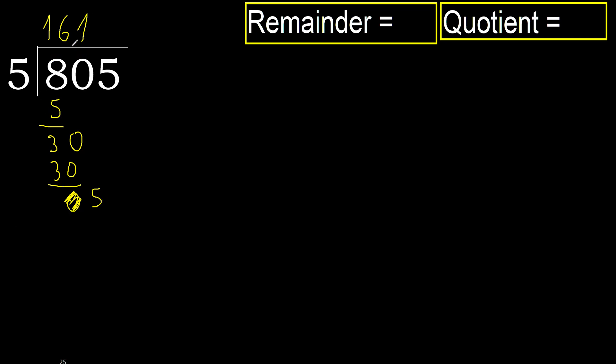5 multiplied by 1 is 5, it is not greater. Subtract 0. Therefore finish it. 805 divided by 5 is 161.